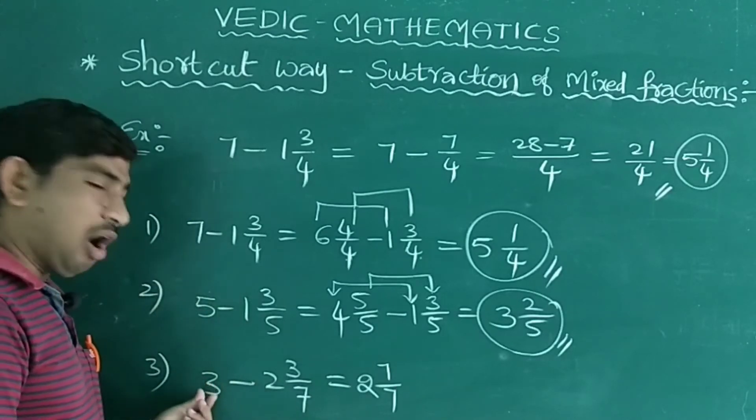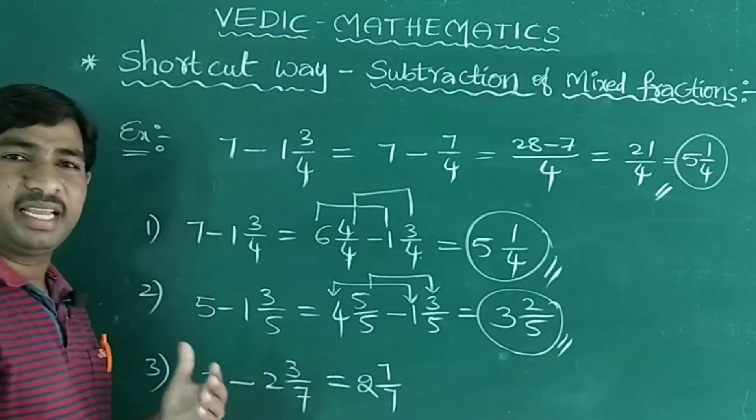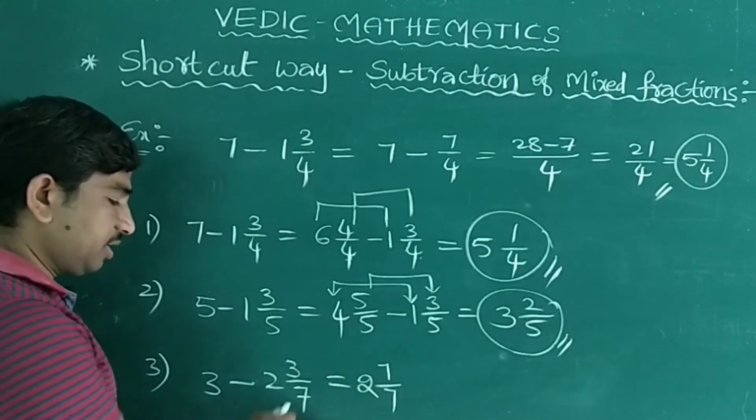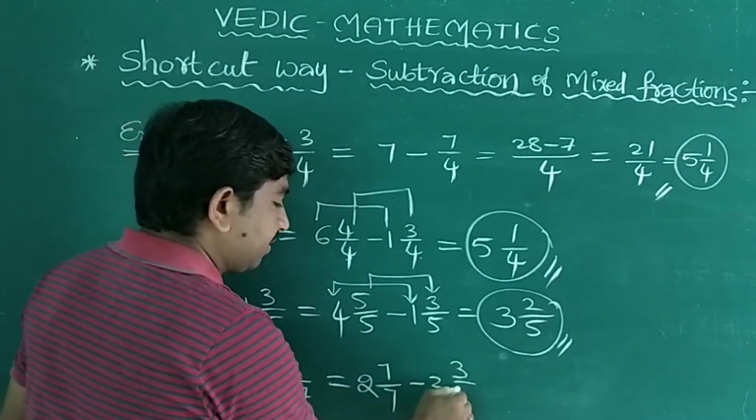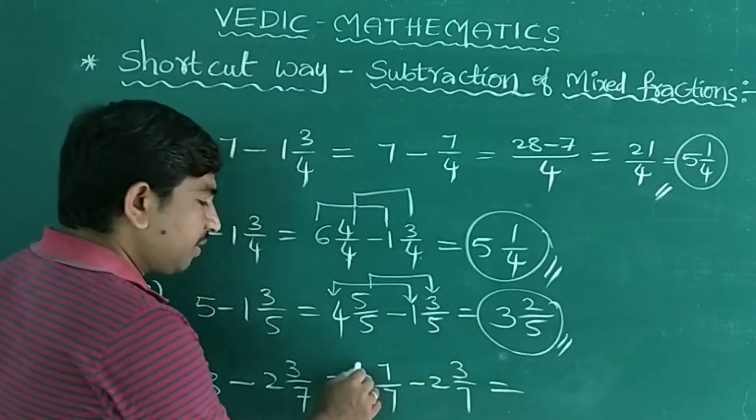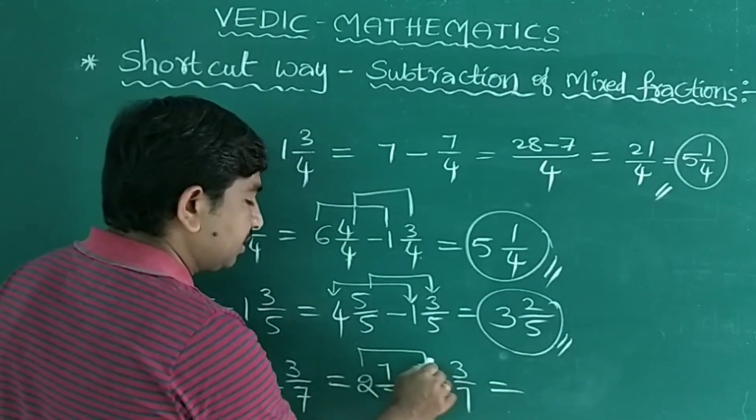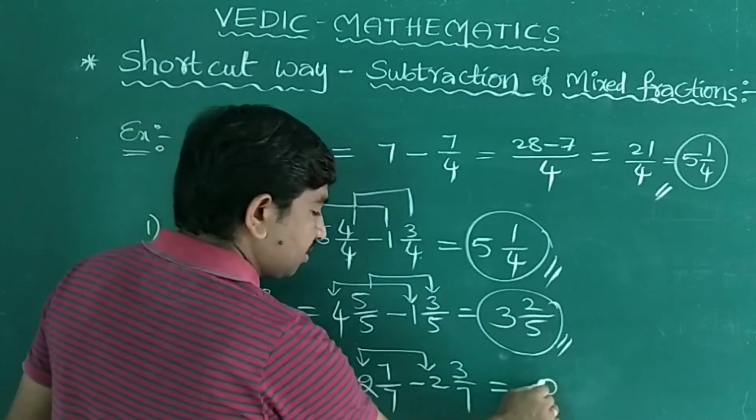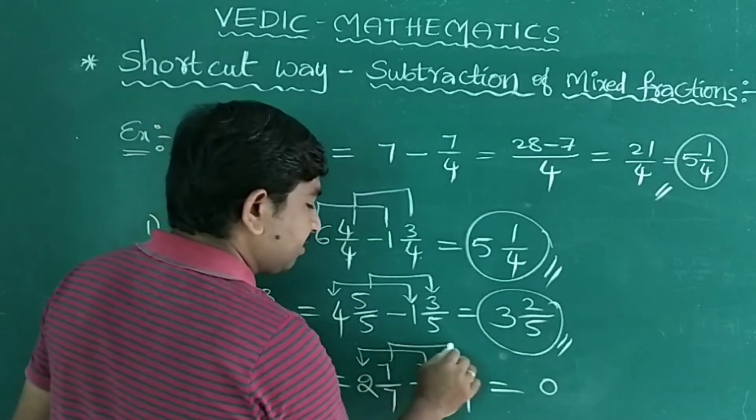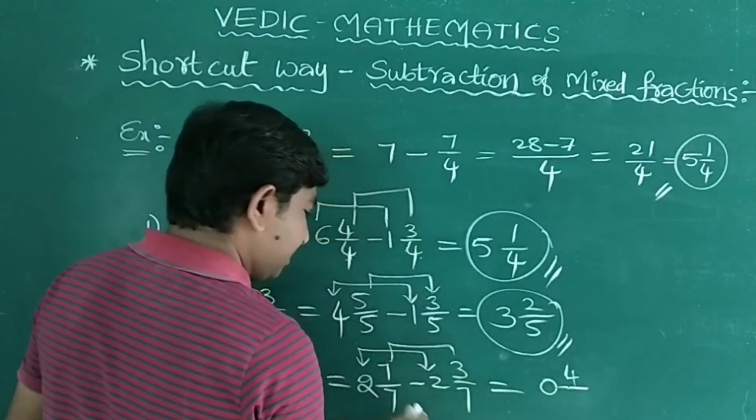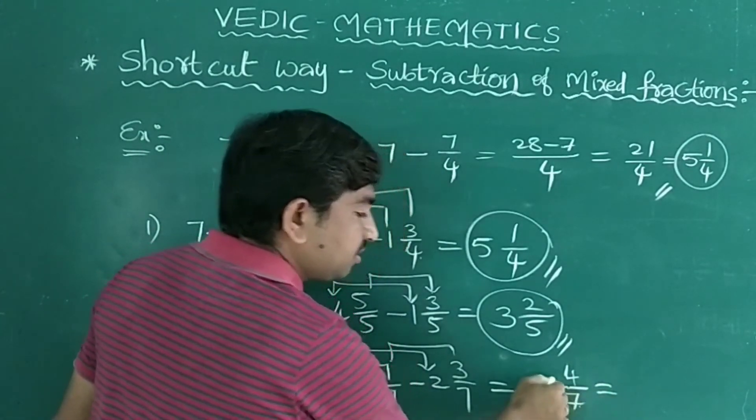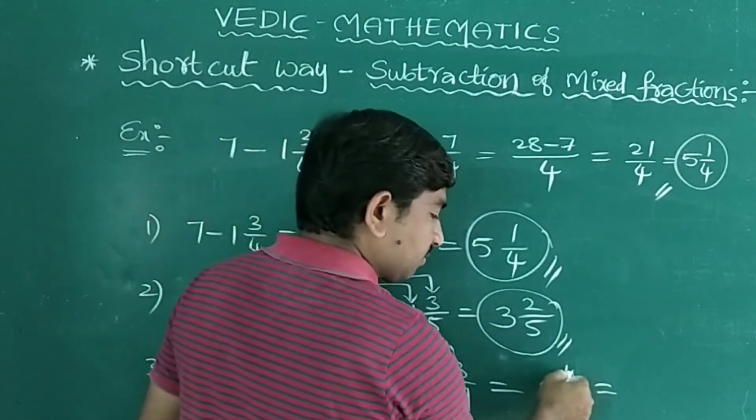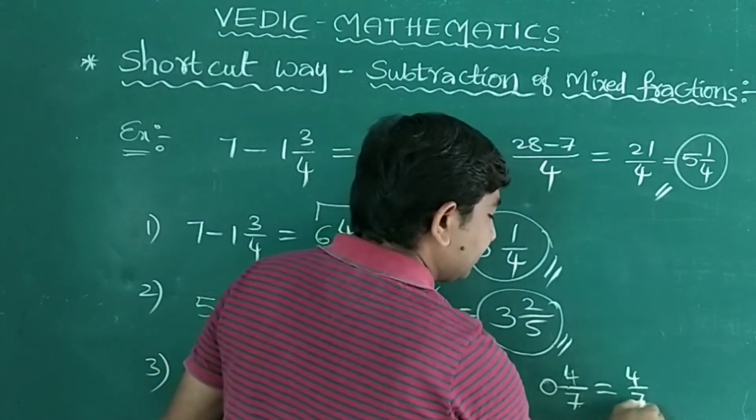That is why you have to convert any given number into such form according to the denominator. So minus 2 3/7. That is 2 minus 2 here, 2 minus 2 equals 0, and 7 minus 3 equals 4 and by, so that is 7/7. Nothing but is what? 7 times 0 is 0, 0 plus 4 is 4, 4/7. This is the answer.